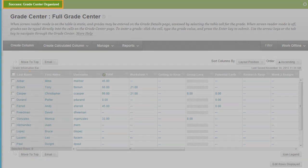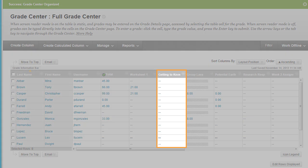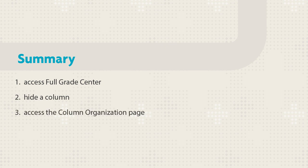A success message appears. The column you hid appears in the new location in the Grade Center grid. Let's review. First, you accessed the full Grade Center and hid a column. Then, you accessed the Column Organization page and learned how to show hidden columns and change the order of columns.